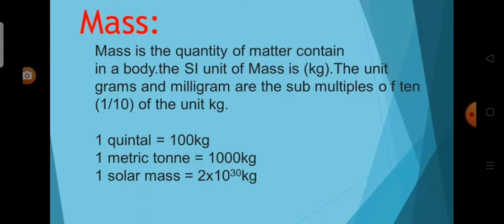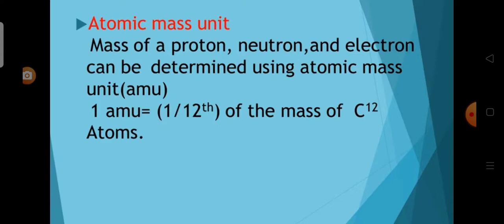Next one is mass. What is mass? Mass is the quantity of matter contained in a body. The SI unit of mass is kilogram. The units grams and milligrams are submultiples of kilogram. 1 quintal equals 100 kilograms. 1 metric ton equals 1000 kilograms. 1 solar mass equals 2 × 10³⁰ kilograms. Mass of a proton, neutron, and electron can be determined using atomic mass unit. 1 atomic mass unit equals 1/12 part of the mass of a carbon-12 atom.